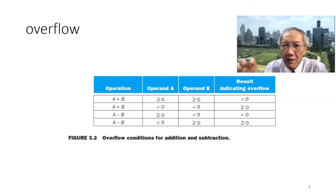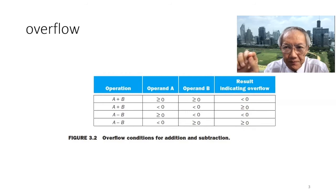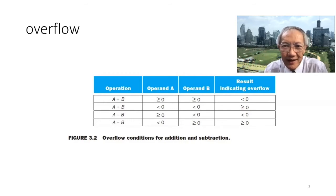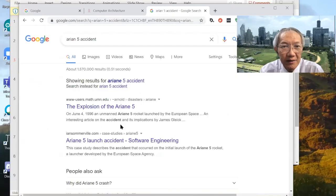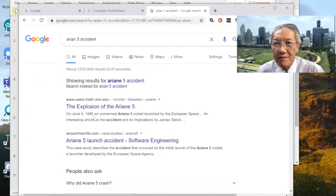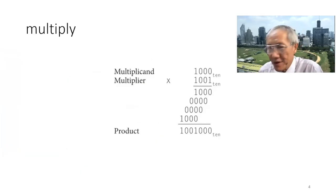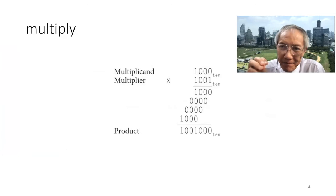You can check the sign to detect overflow. If numbers of different signs are added, overflow is impossible. The compiler, when we program the machine using high-level language, must generate proper code to check the overflow condition after performing arithmetic. For example, if you do addition and both operands are positive, overflow might occur — as seen in the Ariane 5 explosion on June 4th, 1996.